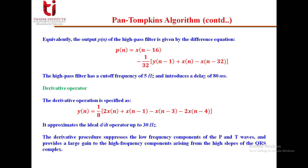After filtering — cascading the low-pass and high-pass filters to make the band-pass filter — we have the derivative operator. The derivative operation equation is: y[n] = (1/8)·(2·x[n] + x[n−1] − x[n−3] − 2·x[n−4]). This is approximately an ideal d/dt operator valid up to 30 Hz. This derivative step suppresses the low-frequency components of the P and T waves and provides large gain to the high-frequency components arising from the steep slopes of the QRS complexes.